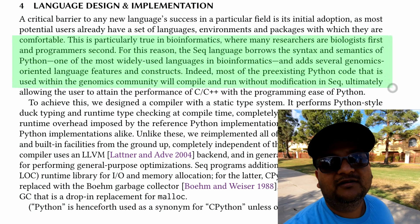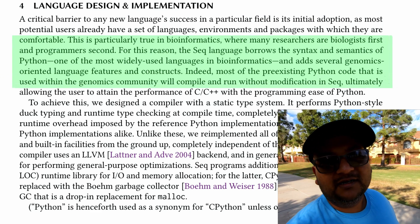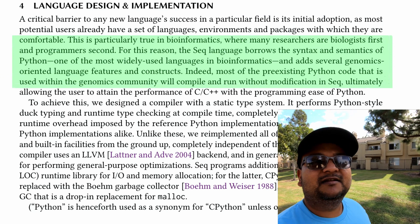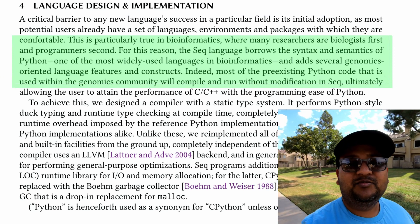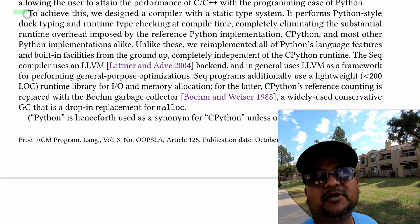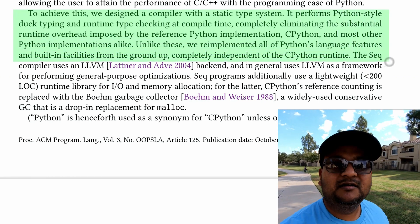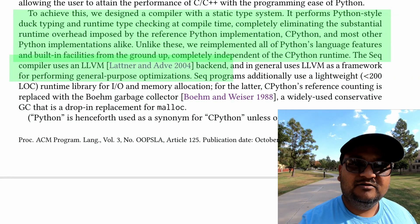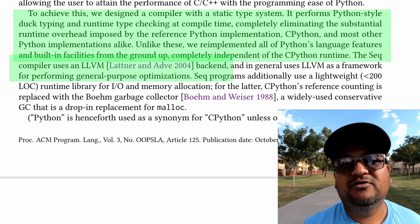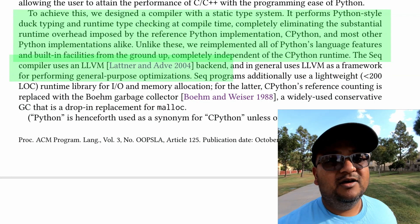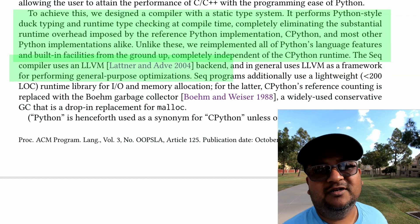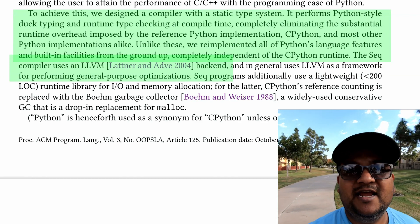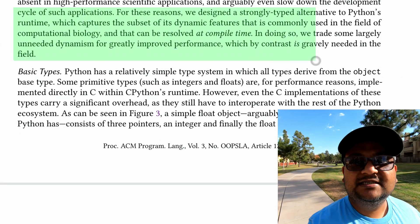Seq was meant to be a drop-in replacement for Python, or at least most of it. This means you can program in Seq and get the expressiveness and productivity of a Python-like language but get the performance of native code. To achieve this, the authors have re-implemented Python from the ground up as a statically compiled language. They have a new compiler which takes Seq code and compiles it to the LLVM intermediate representation, then uses the very mature and advanced LLVM compiler toolchain to emit fast native code.